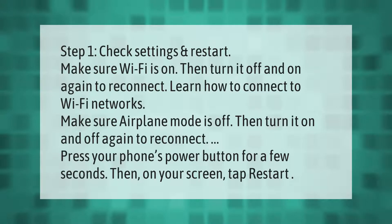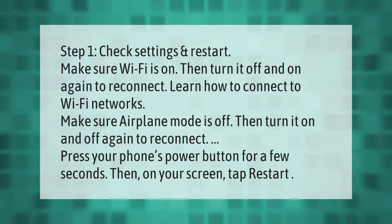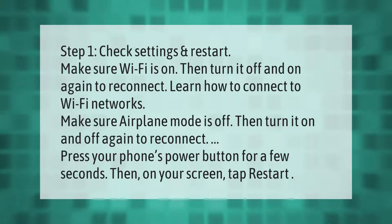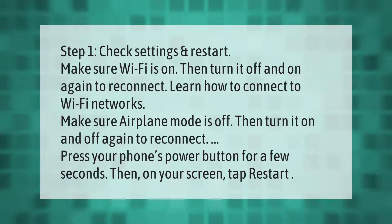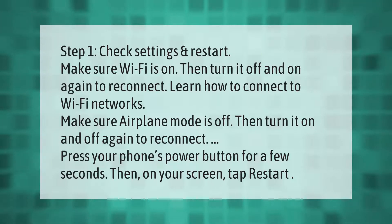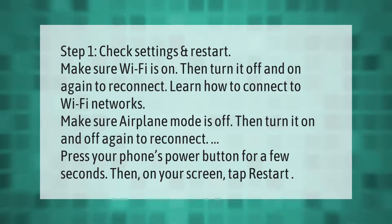Step one — check settings and restart. Make sure Wi-Fi is on, then turn it off and on again to reconnect. Make sure airplane mode is off, then turn it on and off again to reconnect. Press your phone's power button for a few seconds, then tap Restart on your screen.